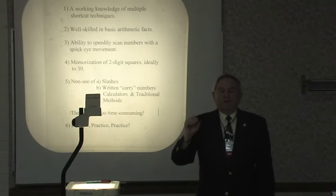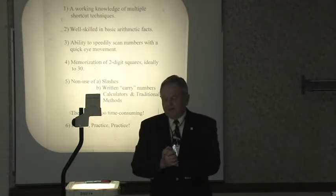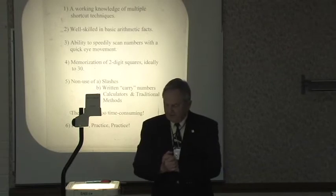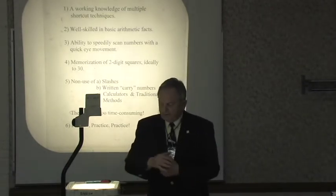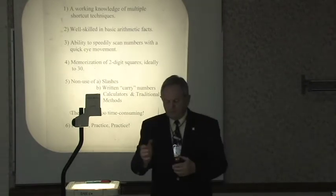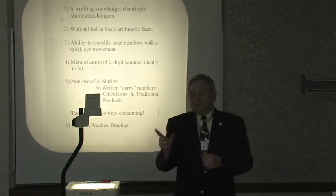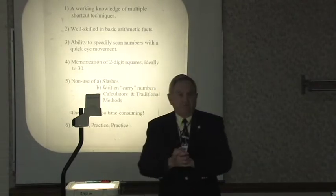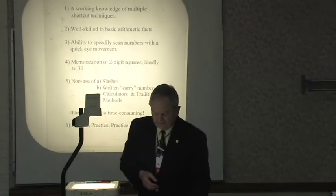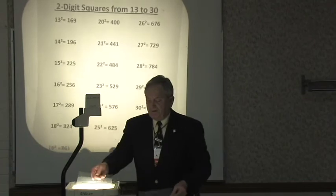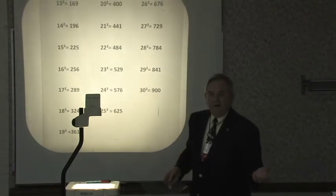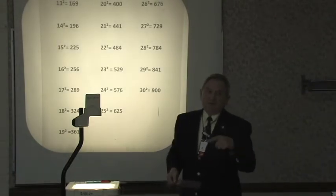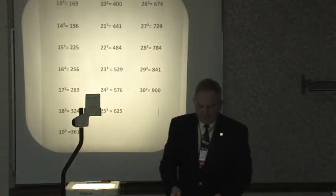And by taking the time to memorize those, again, as you'll see later on today when we get into multiplication, it can help me with some of these shortcut methods. We want to get away from using slash marks and the little written carry numbers, especially in addition and subtraction. And, of course, we want to get away from calculators and traditional algorithmic methods because they're all too time consuming. And actually, the two most important of these six are number one and number six. So you've really got to practice. But if you do, I guarantee it's going to pay off. If you memorize your squares up through 30, I mean, here they are. That's what they look like. Of course, it doesn't do me any good to tell you that 676 is the perfect square, unless I can also tell you 676 is the perfect square of 26. You have to be able to associate it, of course, with the number.